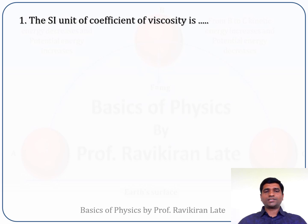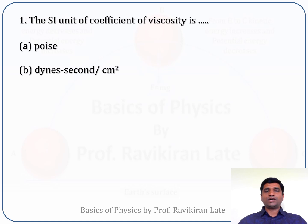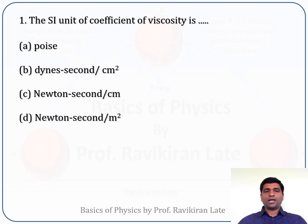The first MCQ for today's discussion is: the SI unit of coefficient of viscosity is? The options given are: A - poise, B - times second per centimeter square, C - newton second per centimeter, D - newton second per meter square. The coefficient of viscosity is a topic we have already discussed in our online lectures.